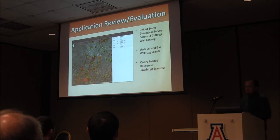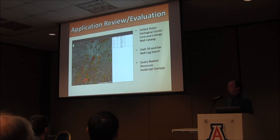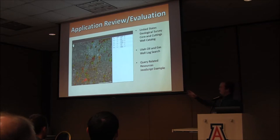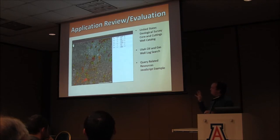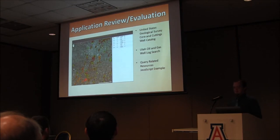The final application I reviewed was the Query Related Resources JavaScript example from Esri's developer page — kind of a hybrid between the other two. It delivers oil and gas well data in a big, simple map, but also displays all the information in a grid on the side, so you have both the well data and the map on screen at the same time — which you couldn't do with the corn cuttings application. I decided to model my application most heavily after this one, taking a few things from the other two.